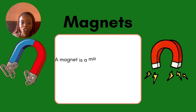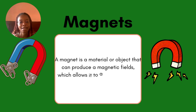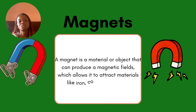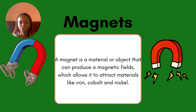First of all, we are starting with the definition of magnets. A magnet is a material or object that can produce a magnetic field, which allows it to attract materials like iron, cobalt, and nickel. Just like we have electrical fields, magnets produce a magnetic field which helps them attract certain materials.